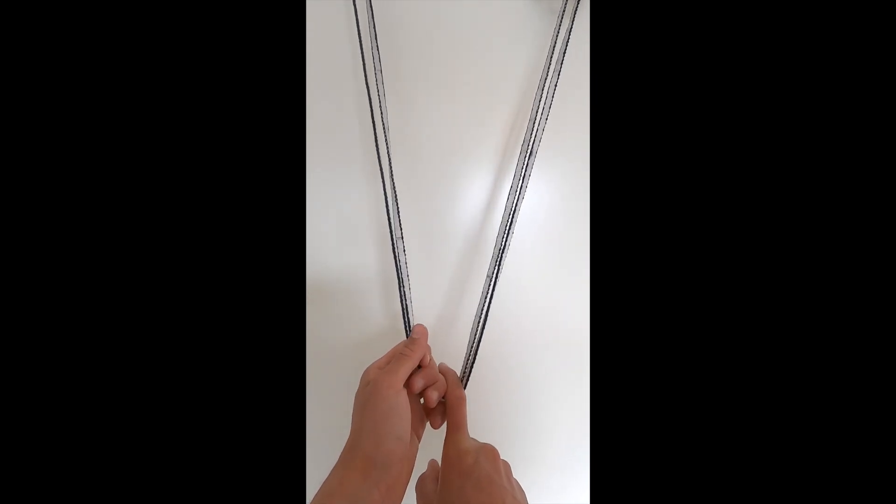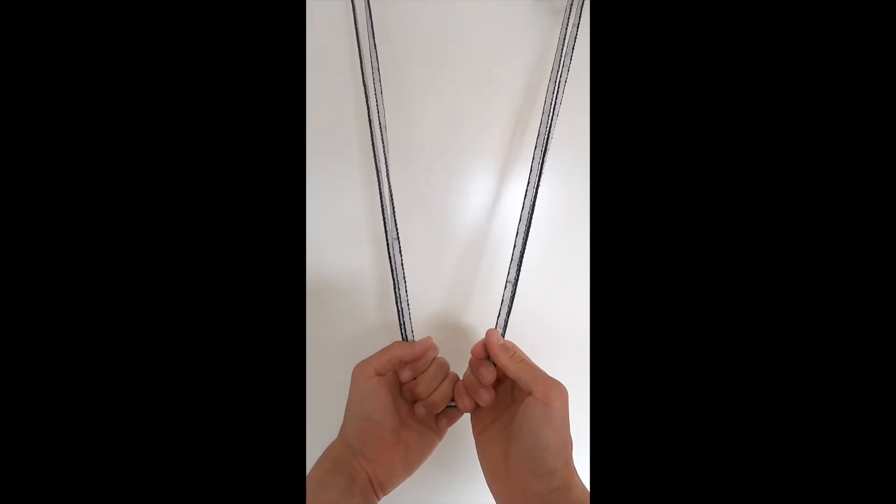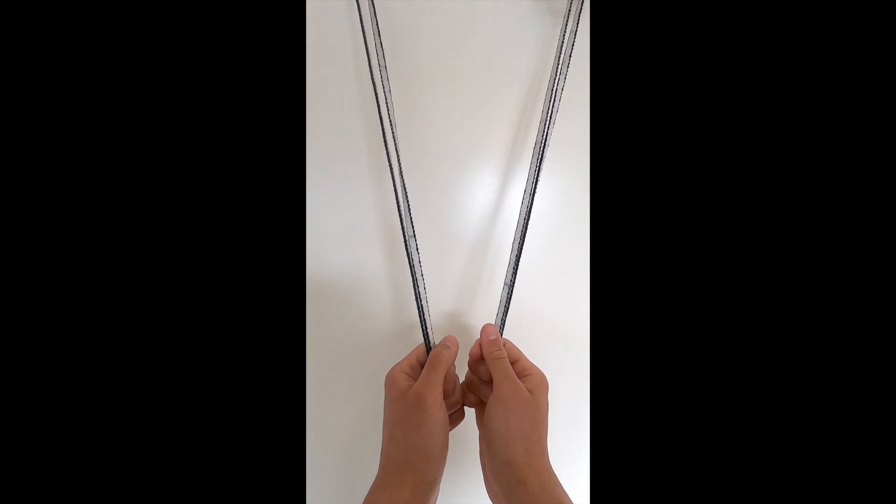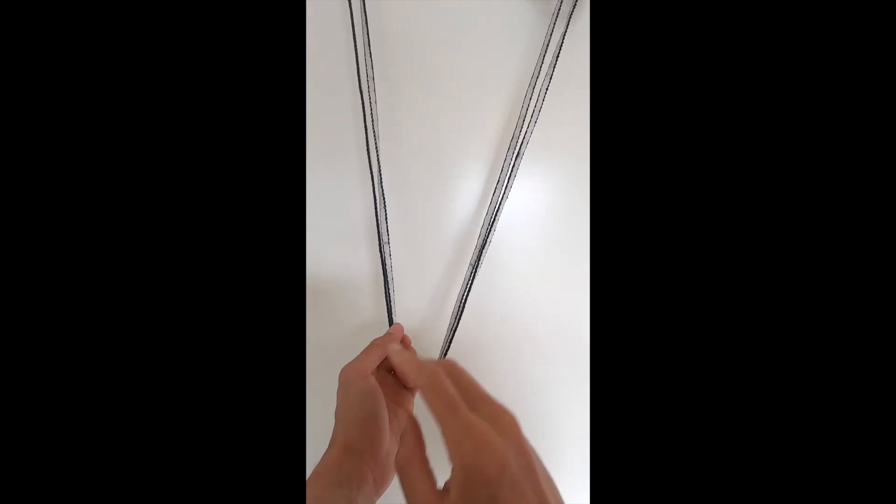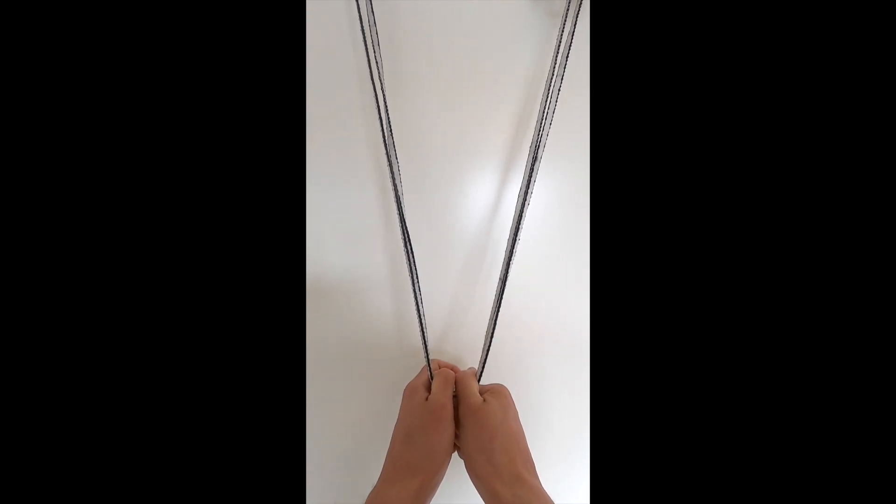Alright guys, so today we're going to go over focal point knots. The most popular we're going to start with the overhand, go to the eight, move to the clove, then we're going to do the single twist and the magic X. Talk about the pros and cons of all these type of knots.